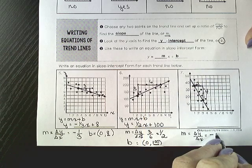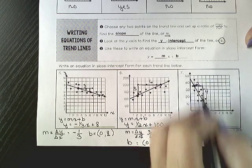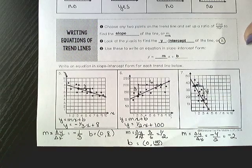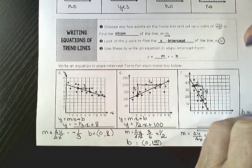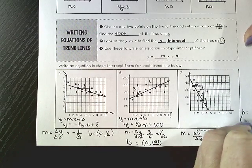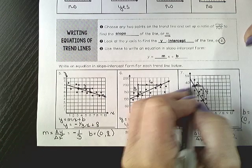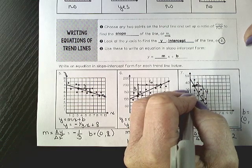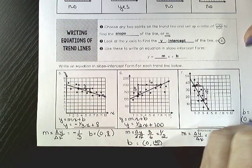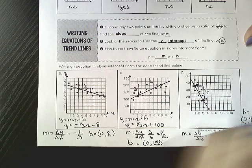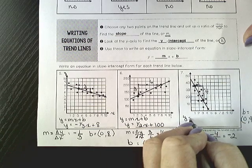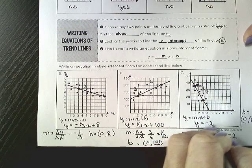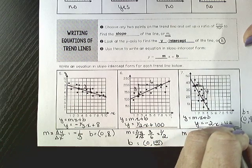So that's negative 4 over 2, which is equal to negative 2. My b, where does it start? Starts up here. Now remember the scale is counted by 5, 10, 15, 20, 25, 30, 35, 40, 45. So y equals mx plus b. Y equals negative 2x plus 45.